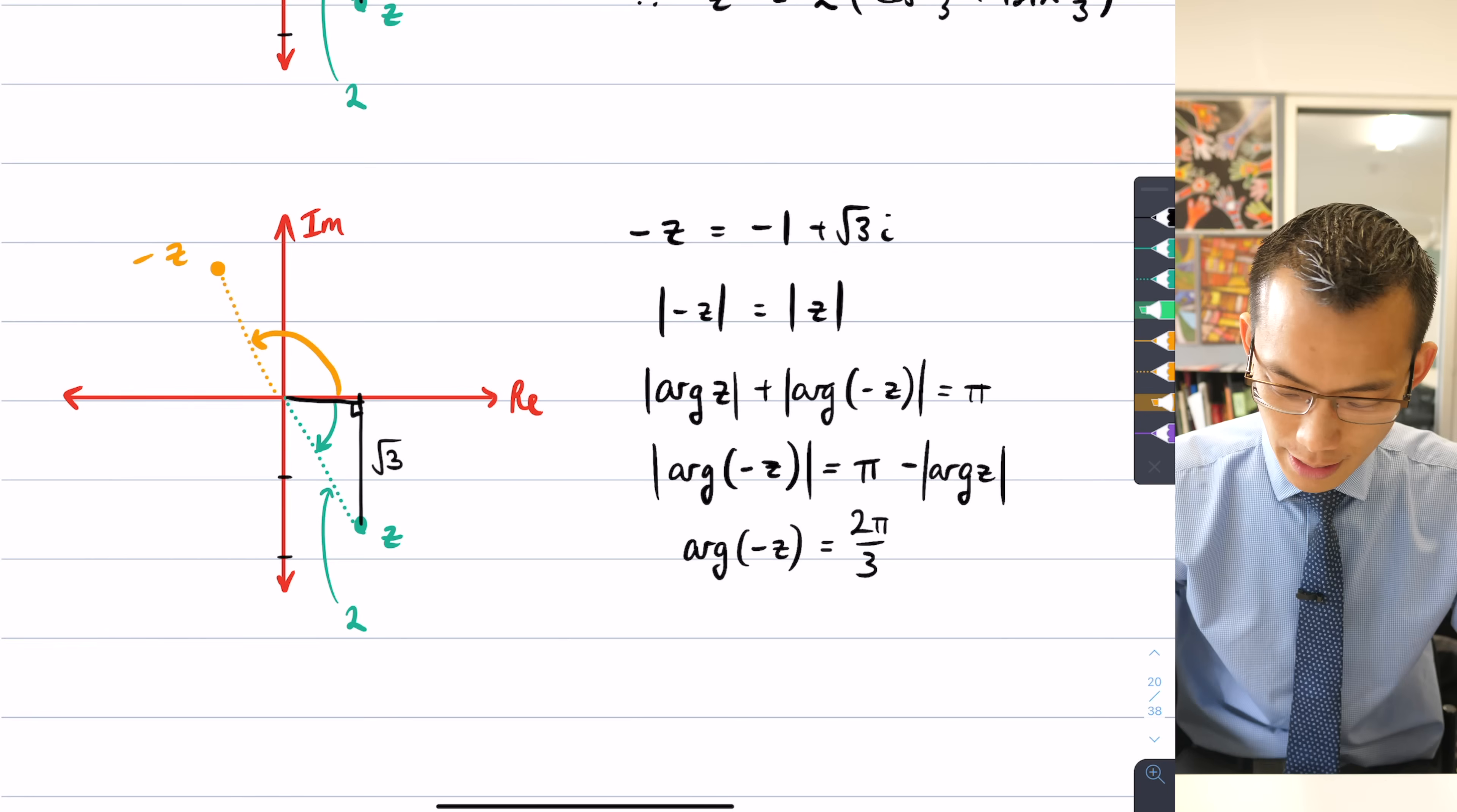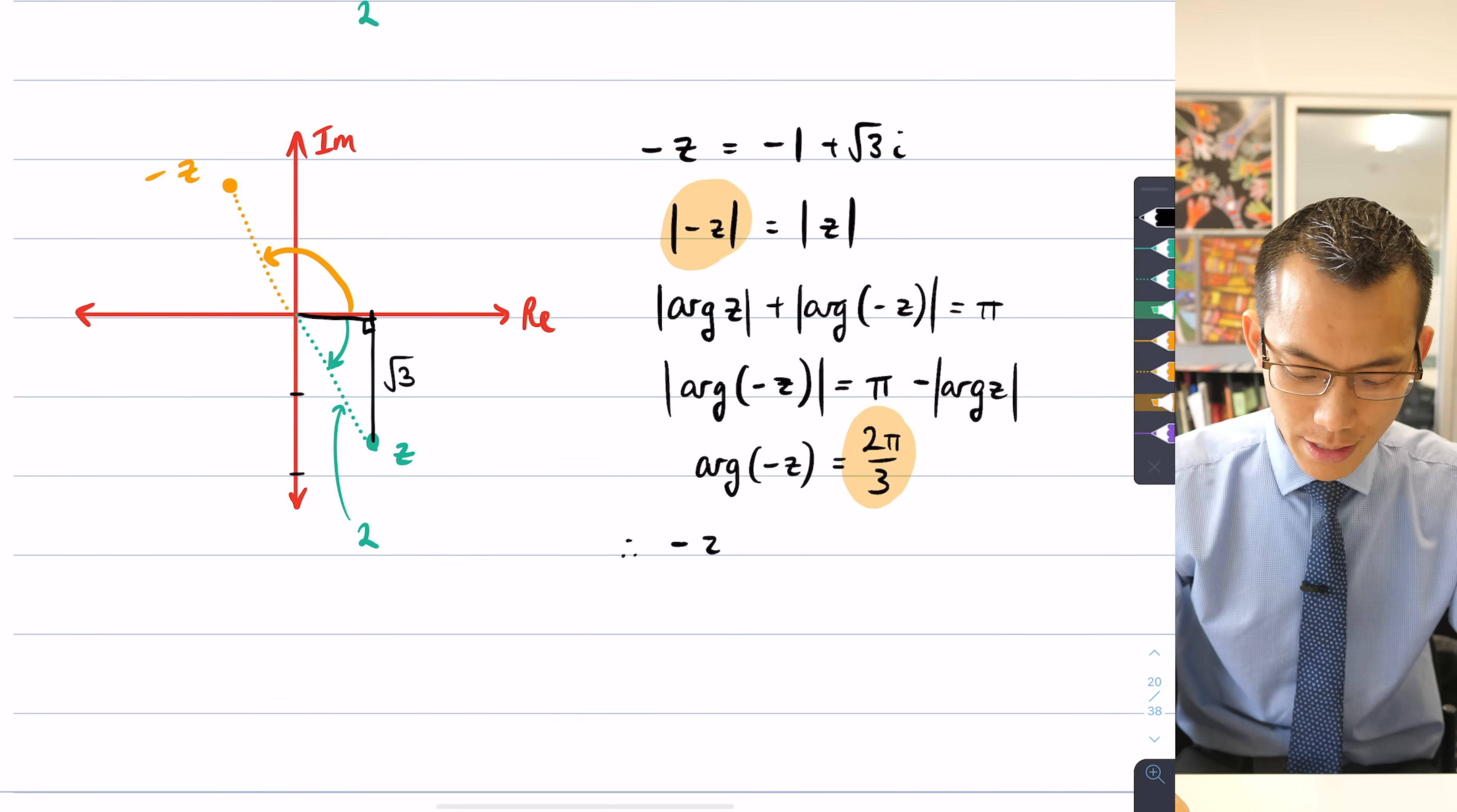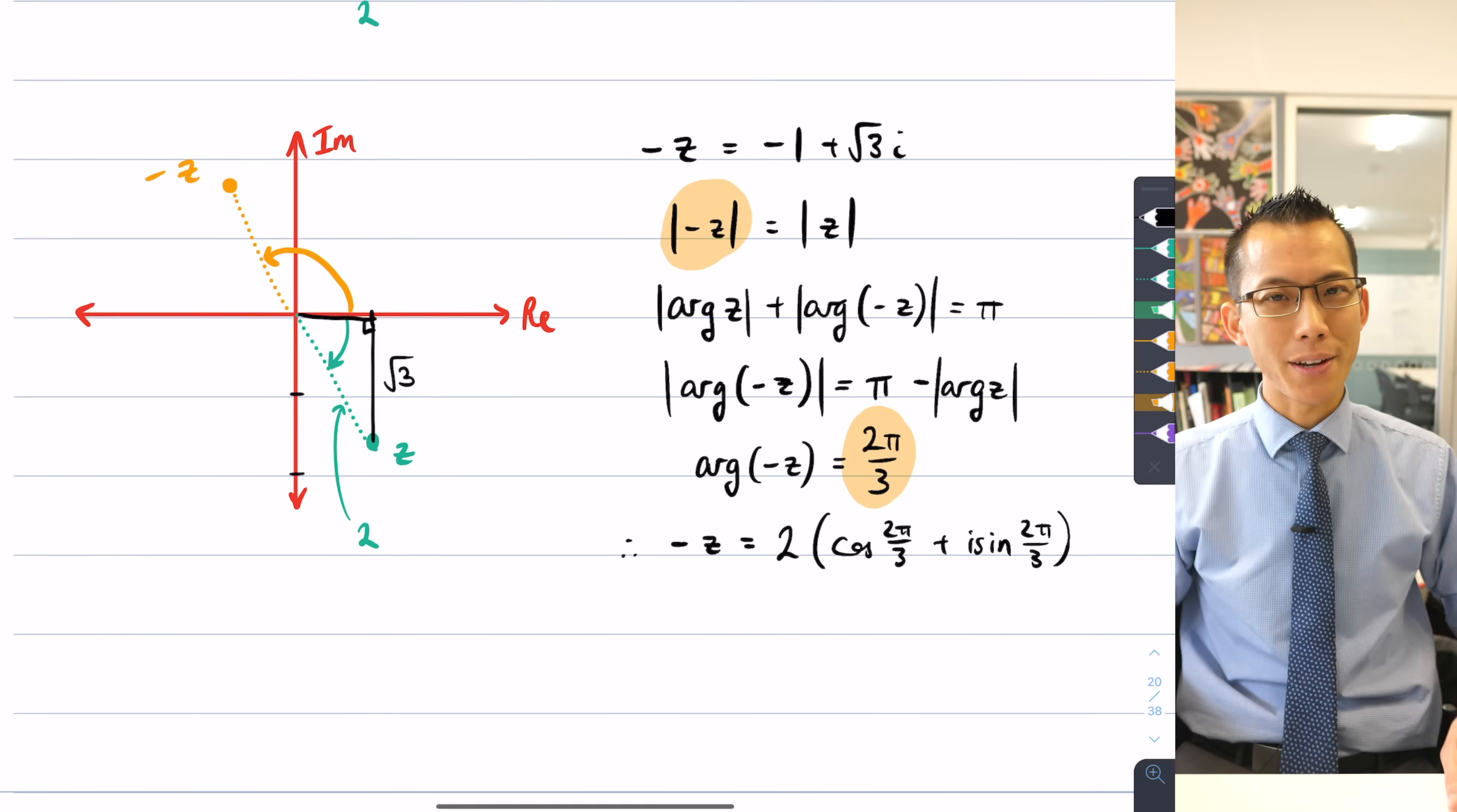So putting these things together, stay with this color, this guy here, and the fact that I already know the modulus from before it was two, I can say, therefore, I can write -z in mod arg form as 2(cos(2π/3) + i sin(2π/3)).